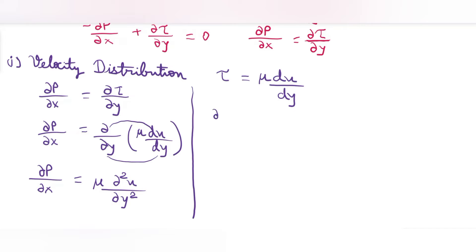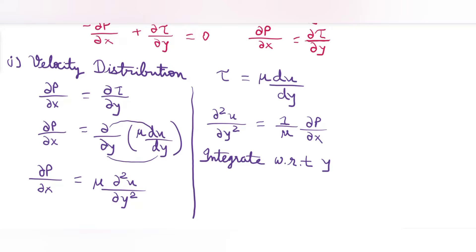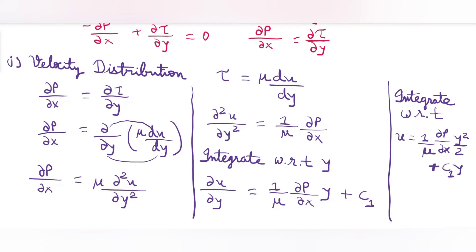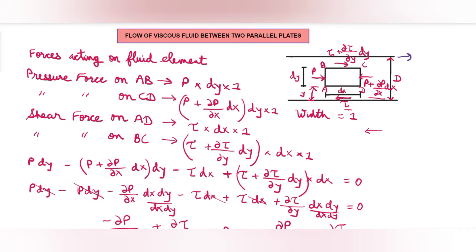We'll now integrate this equation. Taking μ to the left-hand side: ∂²u/∂y² = (1/μ)(∂P/∂x). Integrating with respect to y: ∂u/∂y = (1/μ)(∂P/∂x)·y + C₁. Integrating again to find u: u = (1/μ)(∂P/∂x)·(y²/2) + C₁y + C₂.